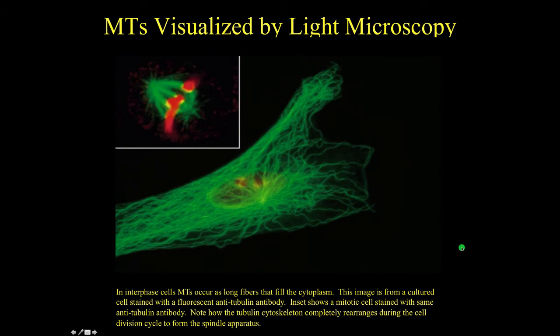In an interphase cell, microtubules appear as long fibers filling the cytoplasm. This is from a cultured cell stained with a fluorescent anti-tubulin antibody. The inset shows a mitotic cell stained with the same antibody — it doesn't take much imagination to see how completely the microtubule cytoskeleton has rearranged from interphase to cell division.